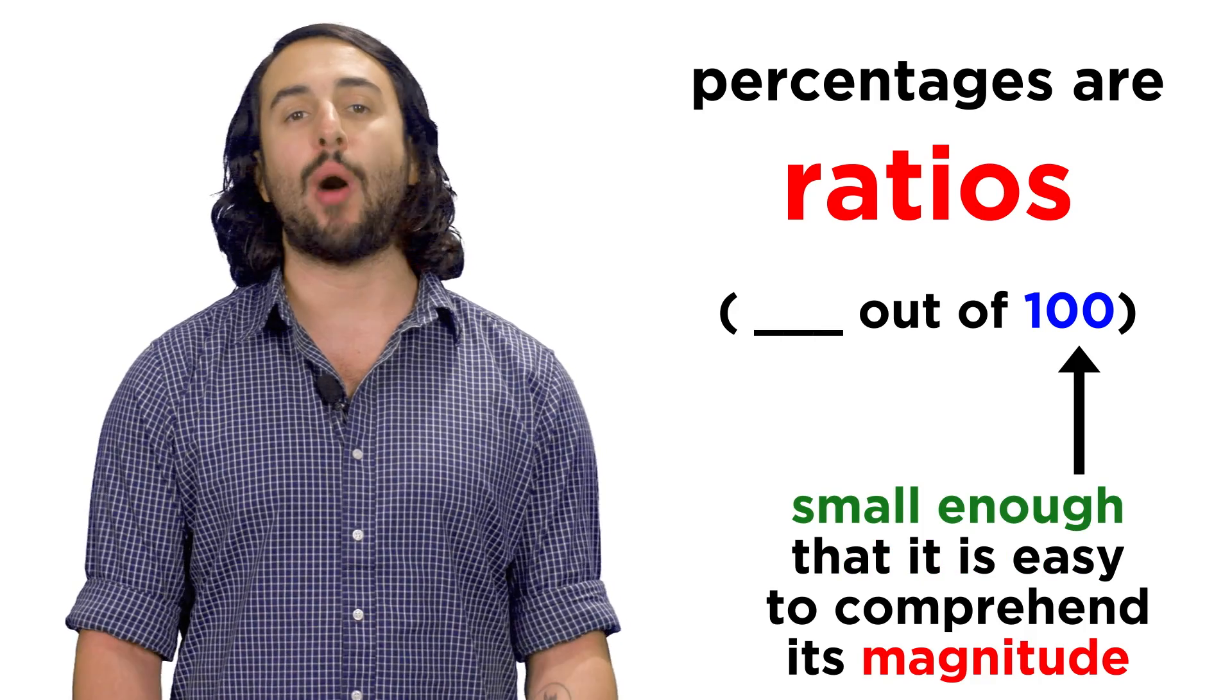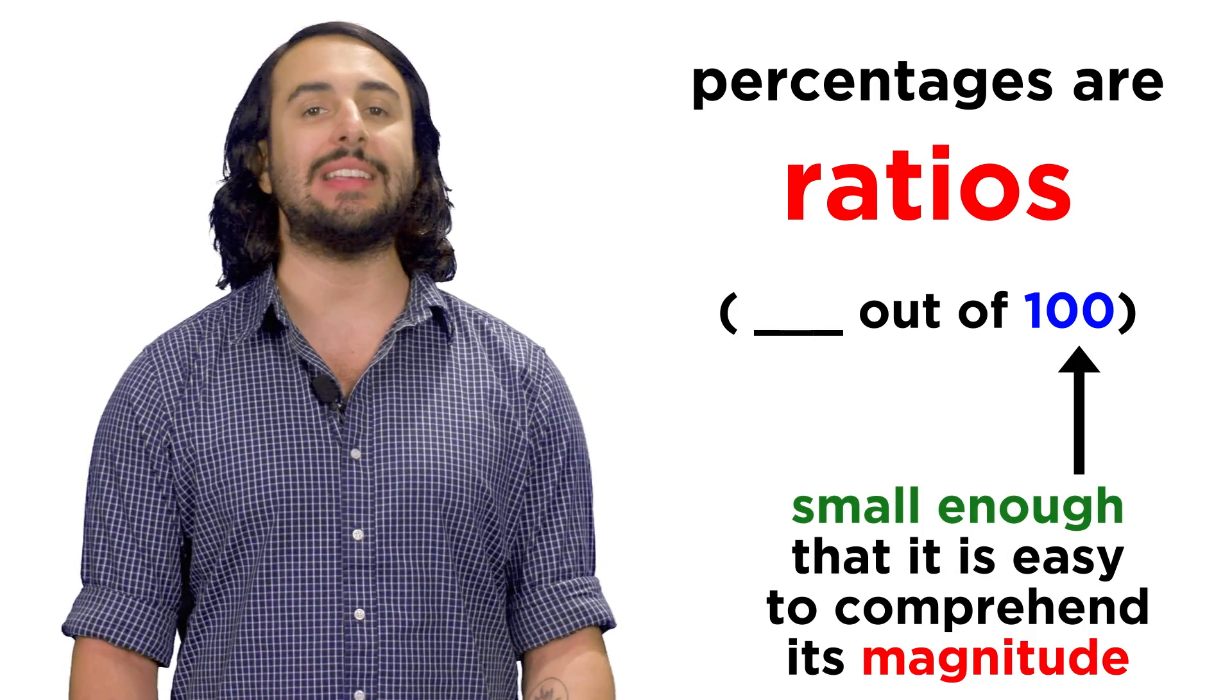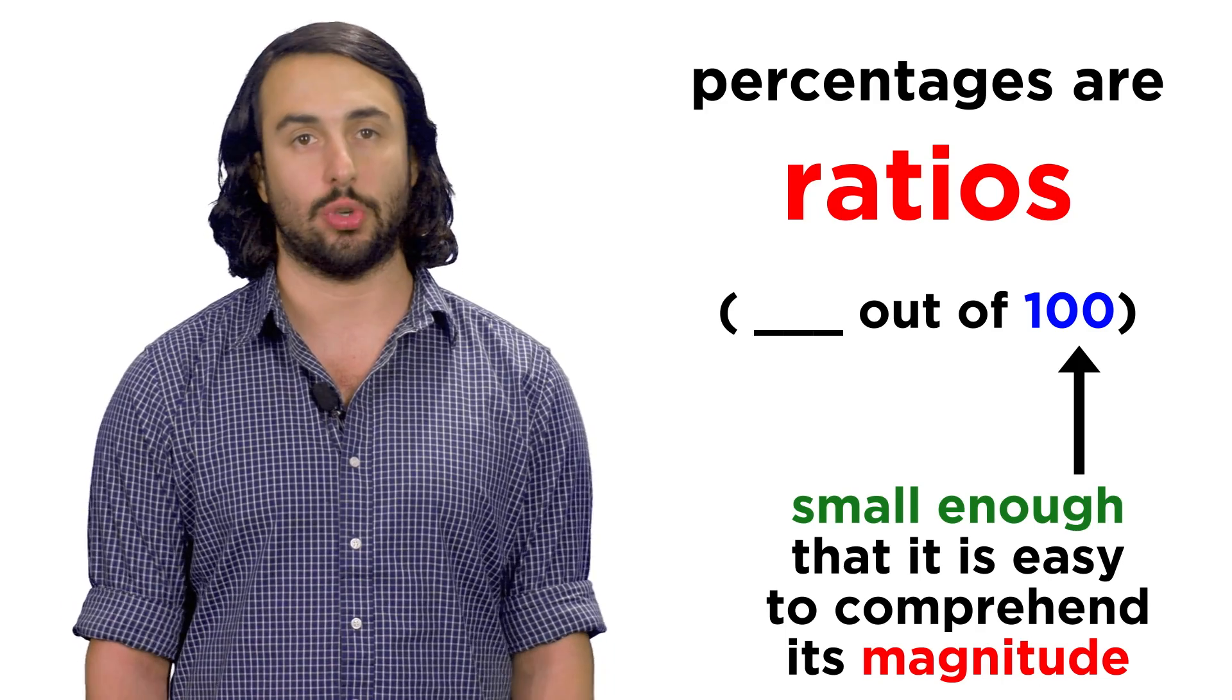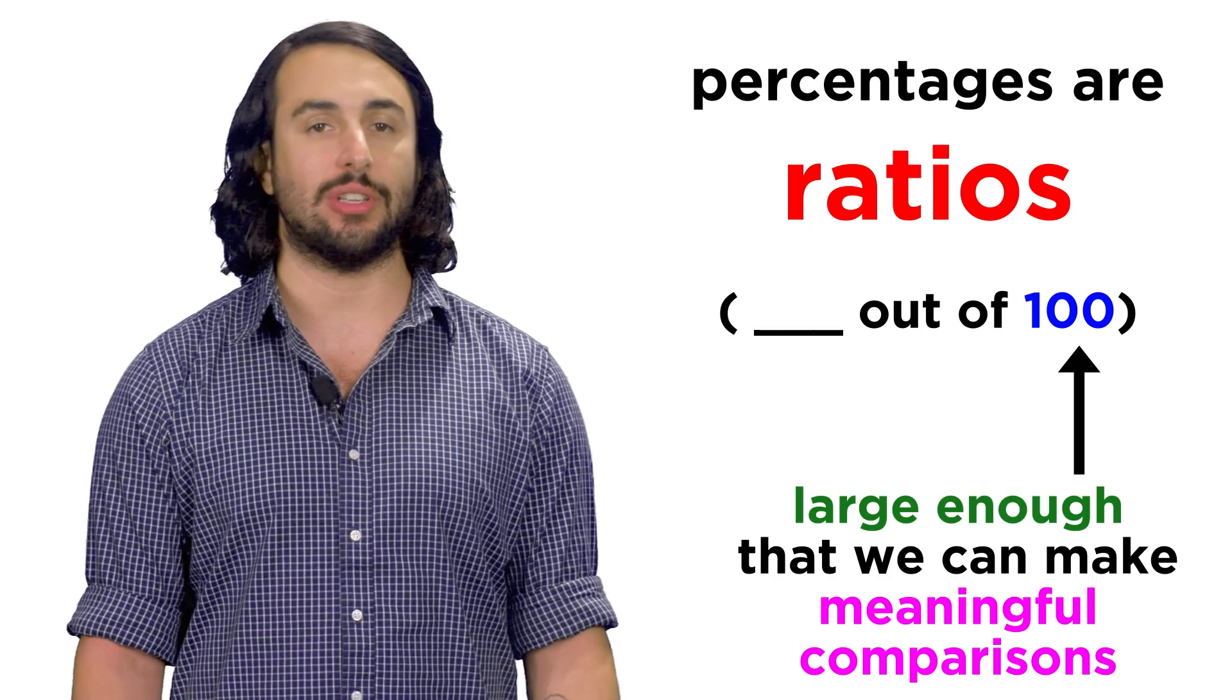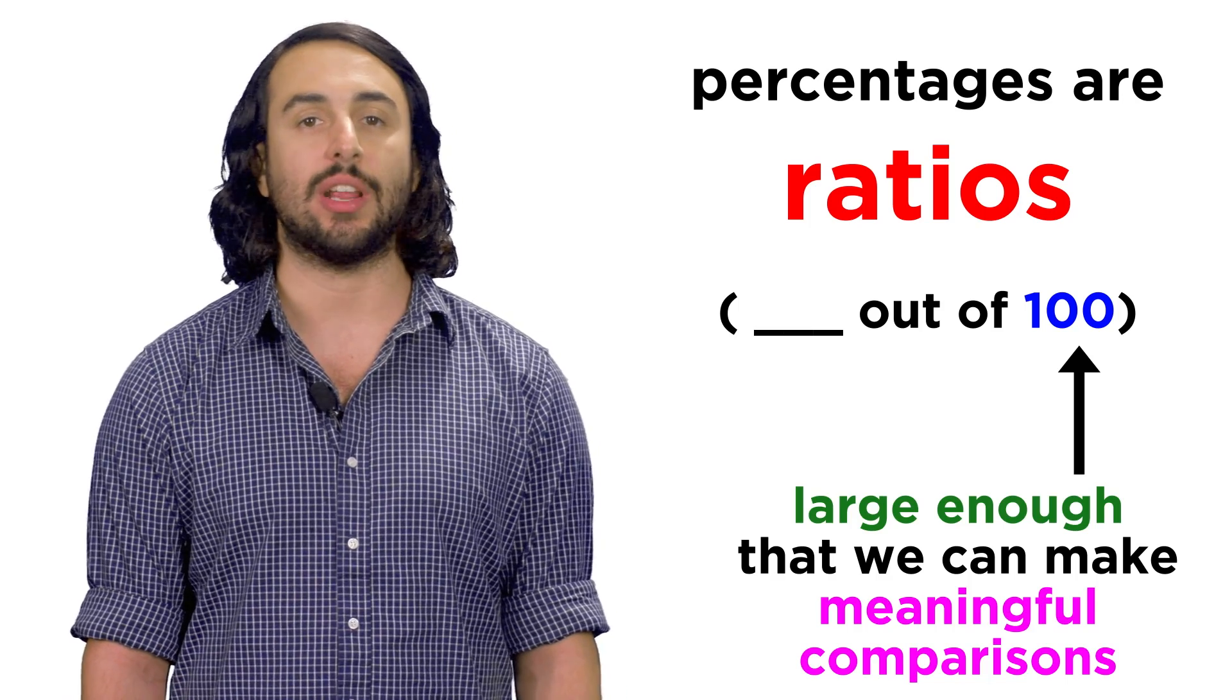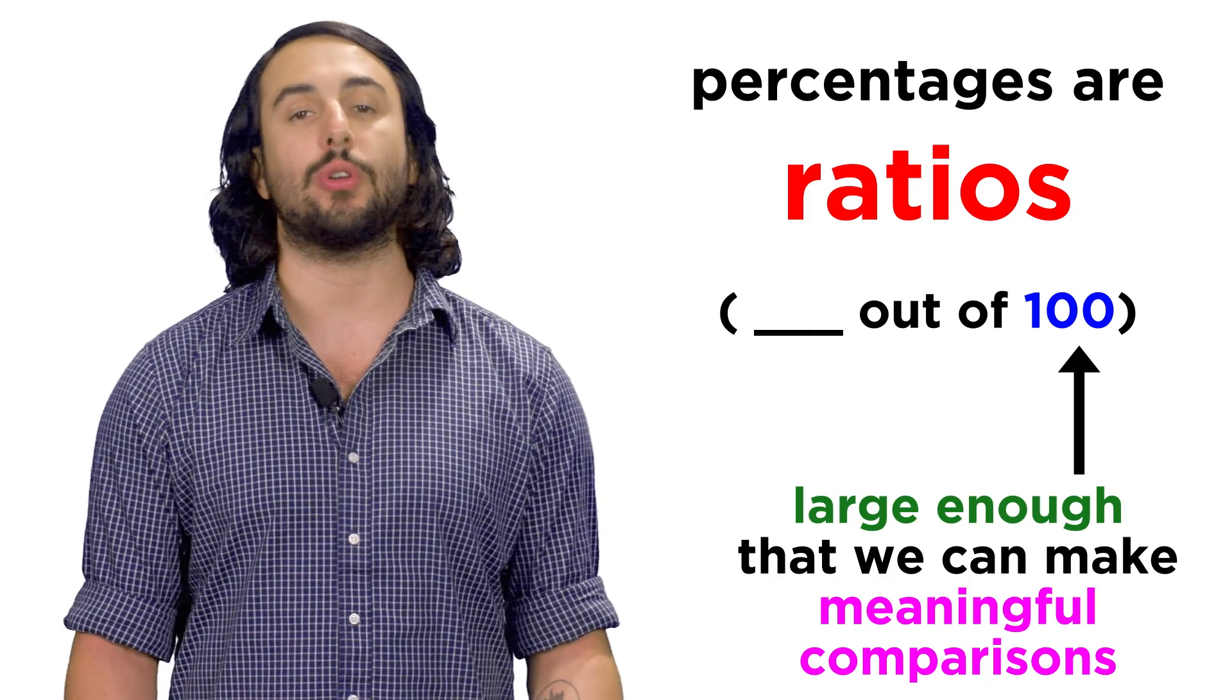One hundred is small enough that our brains can easily comprehend its magnitude, but also large enough that there are sufficient gradations between zero and a hundred, so as to make meaningful comparisons.